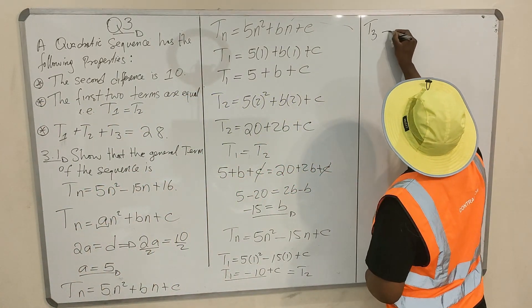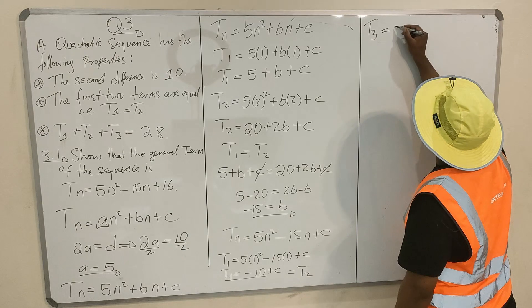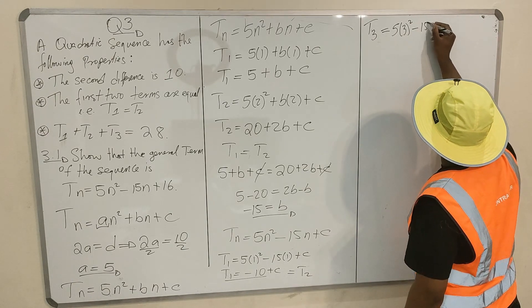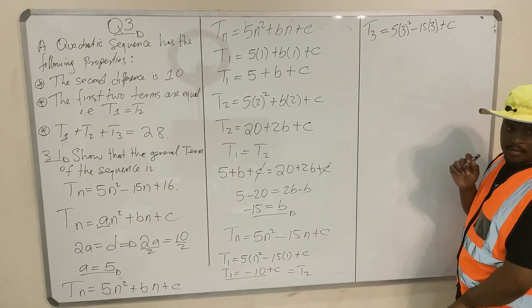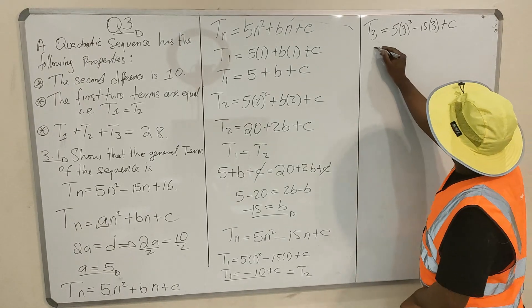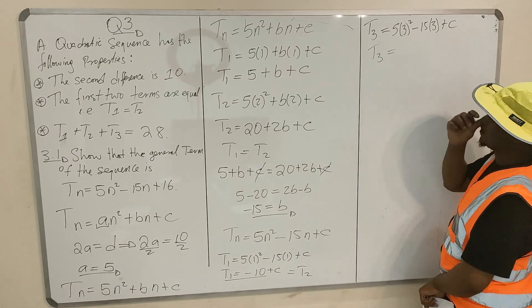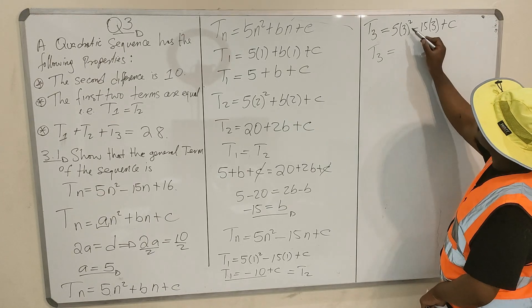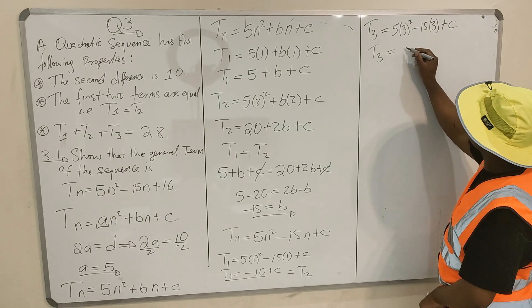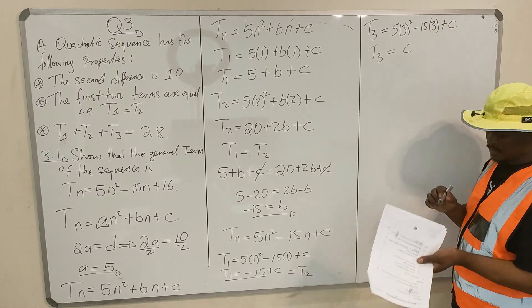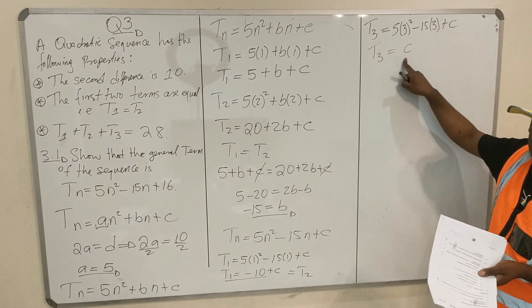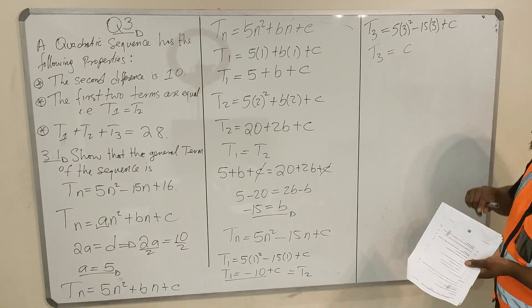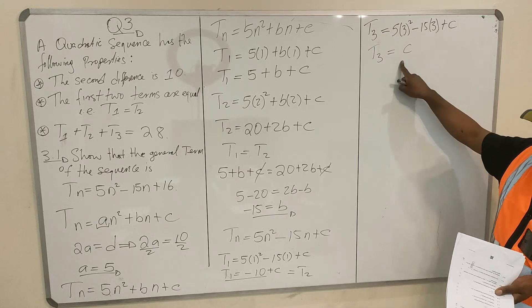Let's find T₃. T₃ = 5(3)² minus 15(3) + C = 45 minus 45 + C = 0 + C. So T₃ = C.